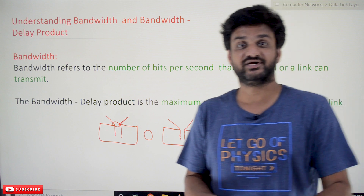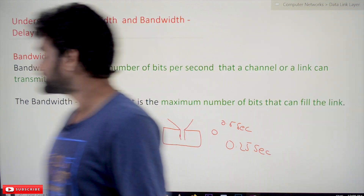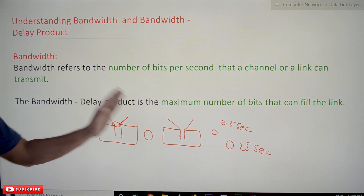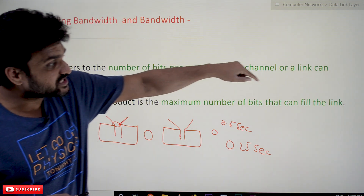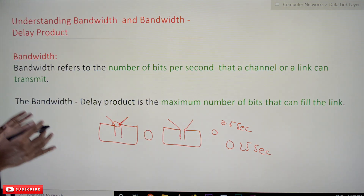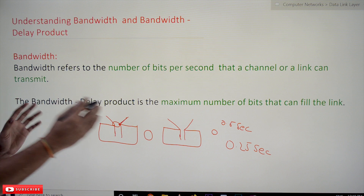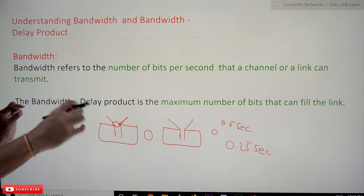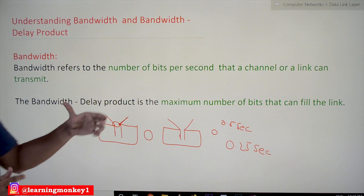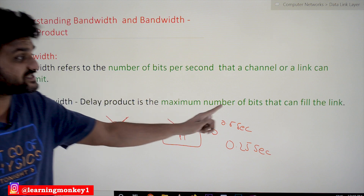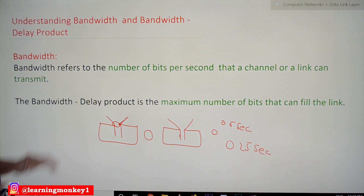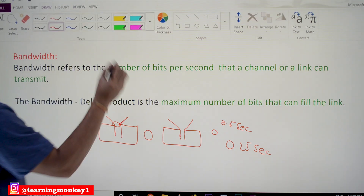That is what we call bandwidth. Now let's understand another concept: the bandwidth-delay product. The bandwidth-delay product is the maximum number of bits that can fill the link between the sender and the receiver at any given time. Let's understand it with a simple example.